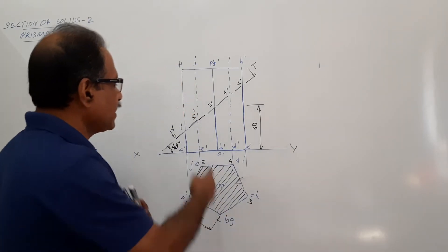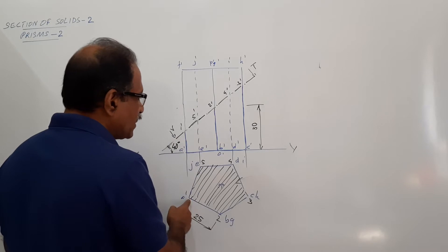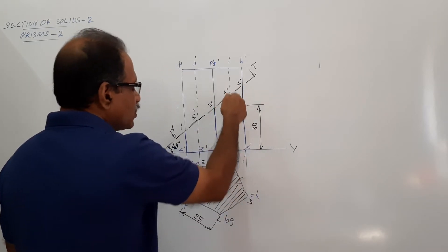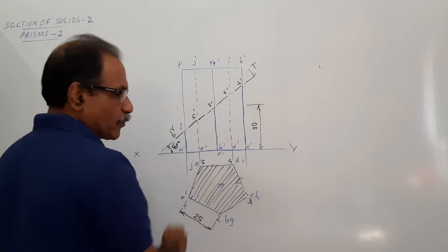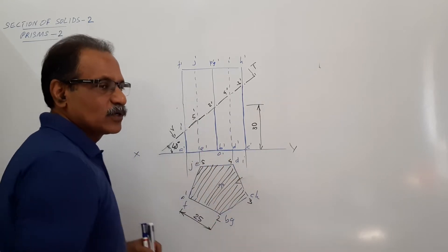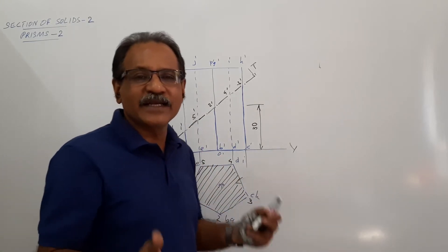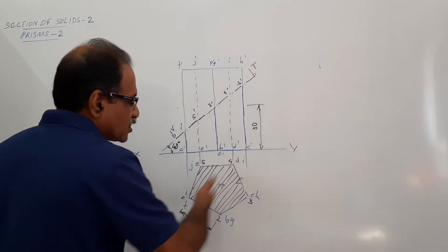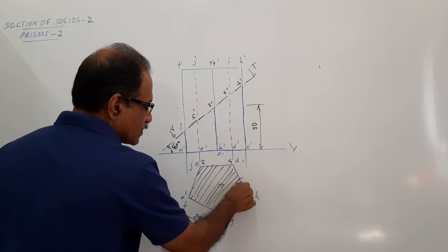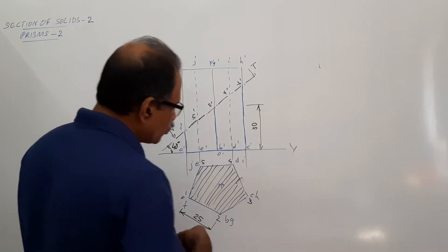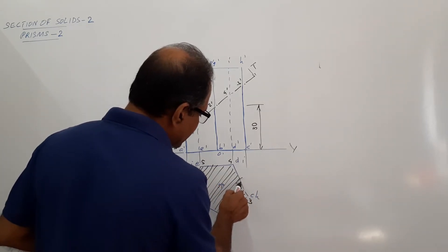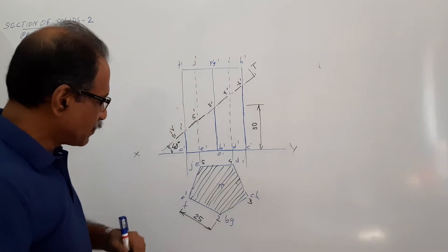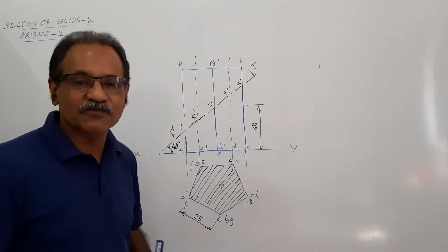Now when you come to the plan: 1-dash when you drop down you will get 1, 2-dash will give 2, 3-dash will give 3, 4-dash will give 4, 5-dash will give 5. Connect 1, 2, 3, 4, 5. Since they are on the corners, there is no need of connecting them separately — draw hatching lines. Hatching represents the presence of a freshly cut surface.